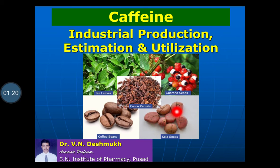From these different sources, caffeine is obtained which causes stimulation of the central nervous system. It is also used as an anorexiant and can be utilized in different anti-cold tablets. Let us study the Industrial Production, Estimation and Utilization of Caffeine.